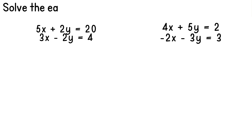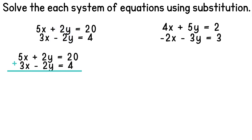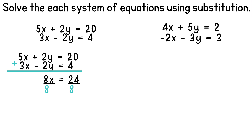We have the system 5x plus 2y equals 20 and 3x minus 2y equals 4. We see that the coefficients of y are positive 2 and negative 2, so this is the variable we'll eliminate. Adding these equations together gives us 8x plus 0y equals 24. Simplifying and dividing both sides by 8 gives us x equals 3.